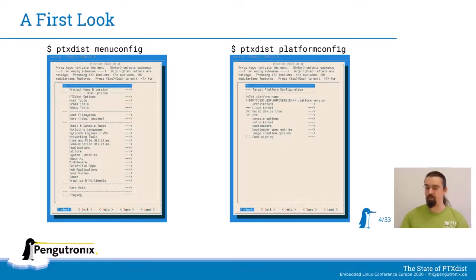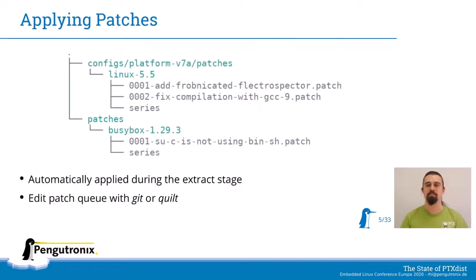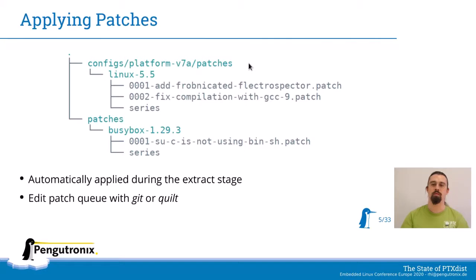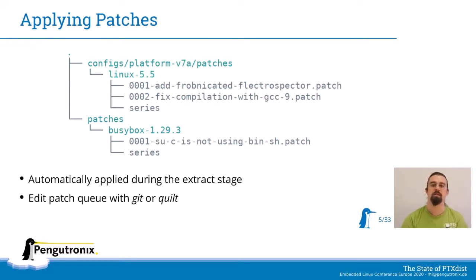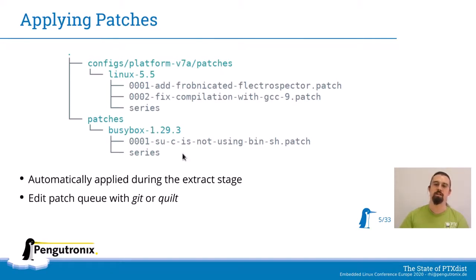If you're working with embedded Linux, you often have to apply patches to your packages. For example, in this case we're applying two patches to Linux and one patch for BusyBox. You can just drop them into these folders in your BSP and they get picked up automatically by PTX-DISTS during the extract stage. The Linux patch directory is in the configs platform v7a folder because it is platform specific, and the BusyBox patch directory is just in the patches folder, so it gets applied for every platform that you want to build.